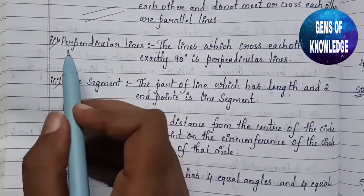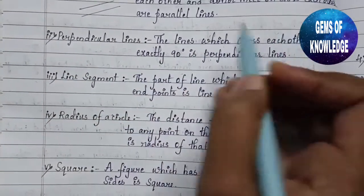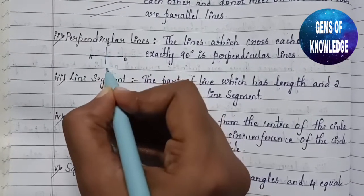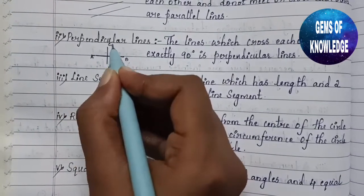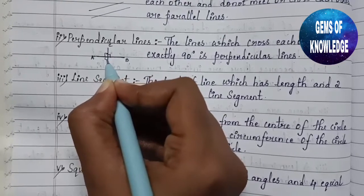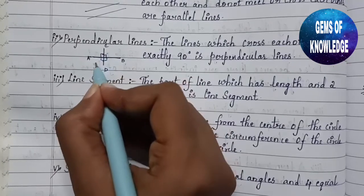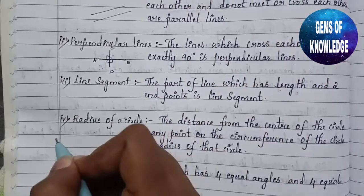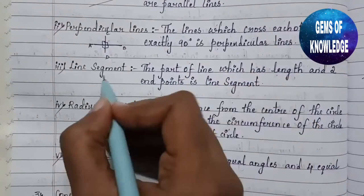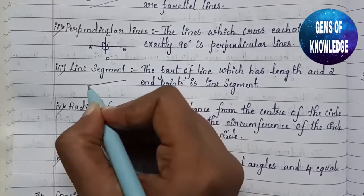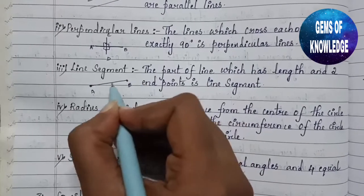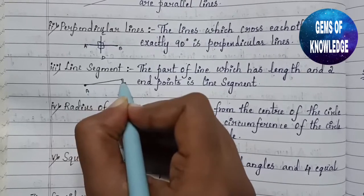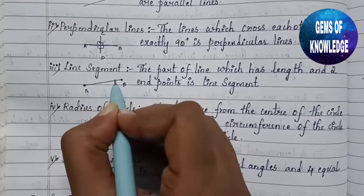Perpendicular lines are two lines — say AB and CD — that cross each other exactly at 90 degrees from every point. So at all four angles it is 90 degrees; when two lines cross at exactly 90 degrees they are called perpendicular lines. A line segment is a part of a line that has a definite length and two endpoints, A and B.